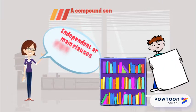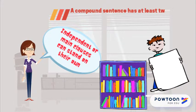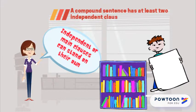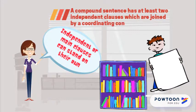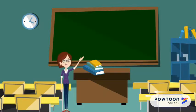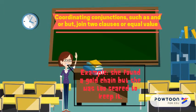A compound sentence has at least two independent clauses which are joined by a coordinating conjunction. Independent or main clauses can stand on their own. Coordinating conjunctions, such as and or but, join two clauses of equal value.